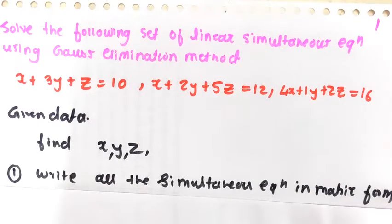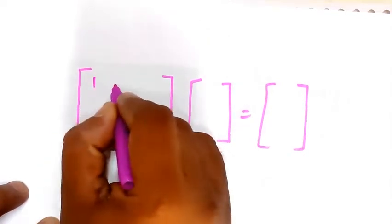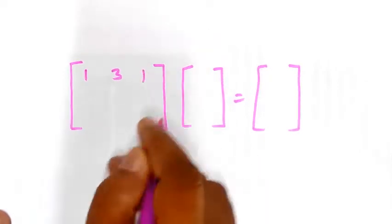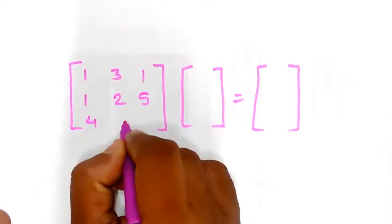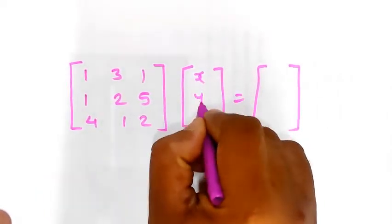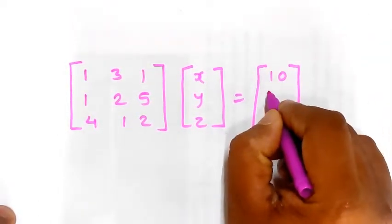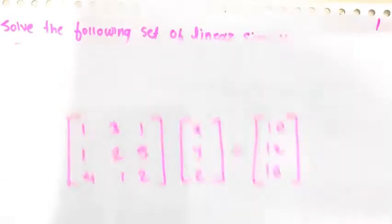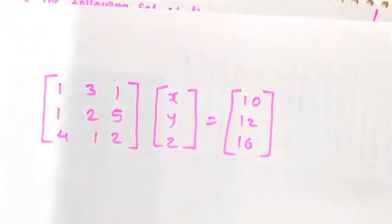The first step is to convert the equations into matrix form. The coefficient matrix is [1, 3, 1; 1, 2, 5; 4, 1, 2], the unknown matrix is [x, y, z], and the right-hand side is [10, 12, 16].